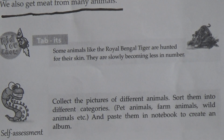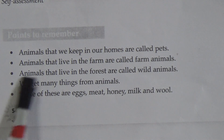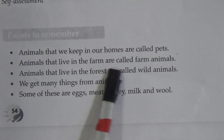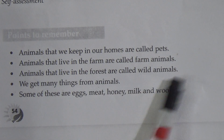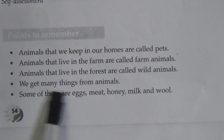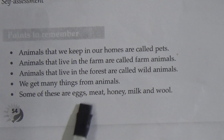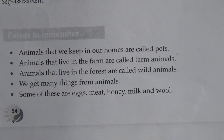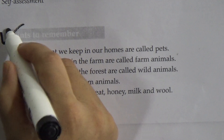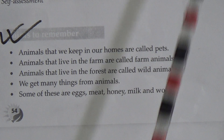Points to remember: Number one — animals that we keep in our house are called pets. Number two — animals that live on the farm are called farm animals. Number three — animals that live in the forest are called wild animals. Number four — we get many things from animals; some of these are eggs, meat, honey, milk and wool. My dear students, you have to memorize these points.